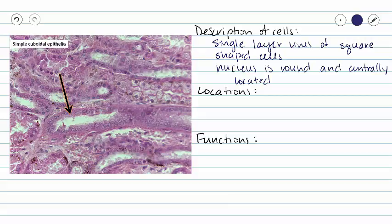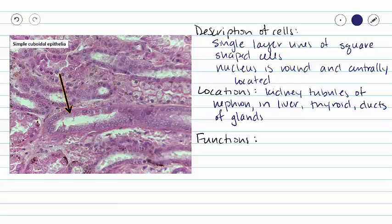Where in our body do we find simple cuboidal epithelium? Well, right now, we are looking at pictures of kidney tubules in our nephron. But we also find simple cuboidal epithelium in our liver, in parts of our thyroid, and also making the ducts of glands, such as your salivary glands or your mammary glands. And finally, we also see simple cuboidal epithelium lining our bronchioles, which are part of our lungs.